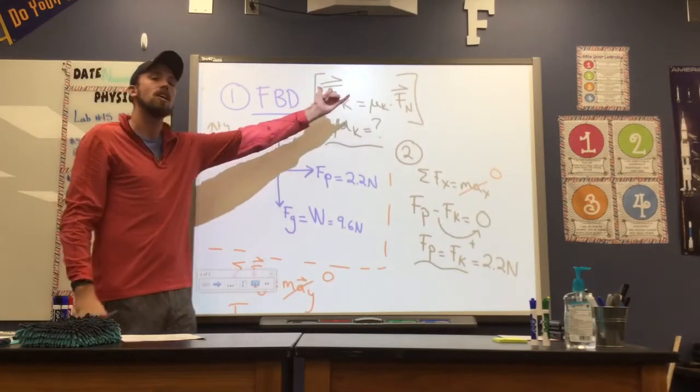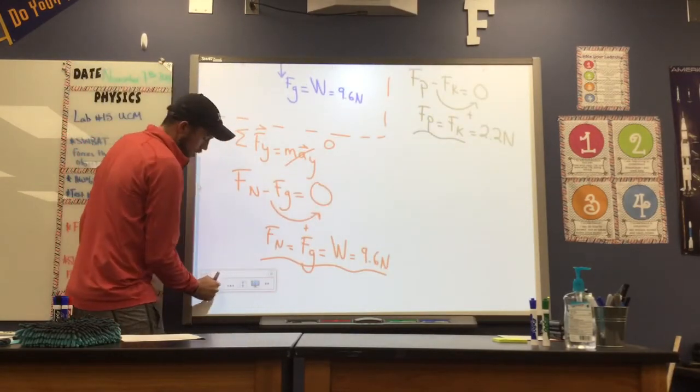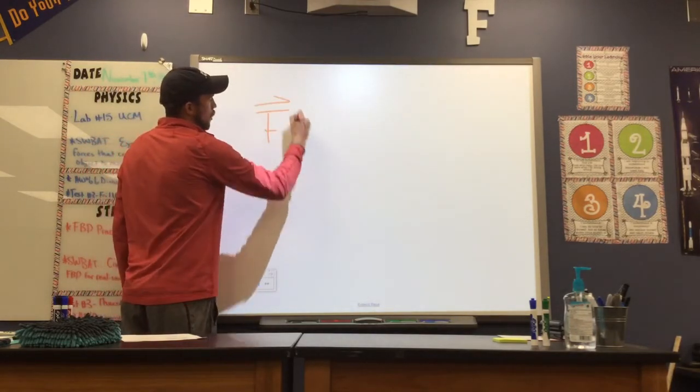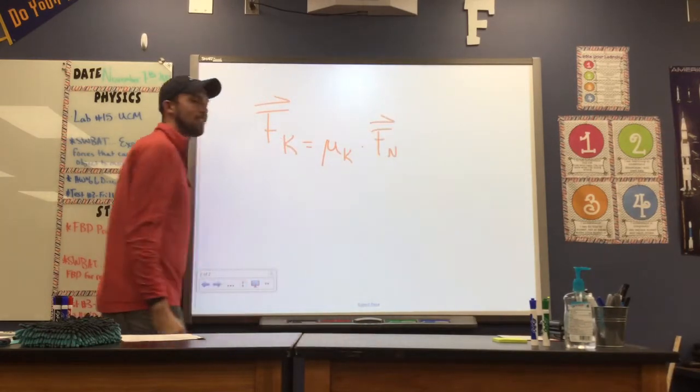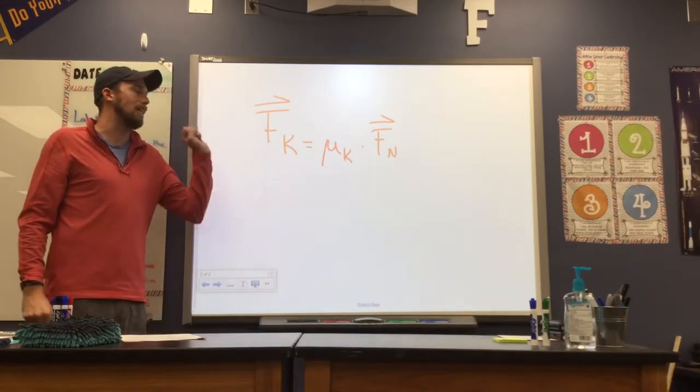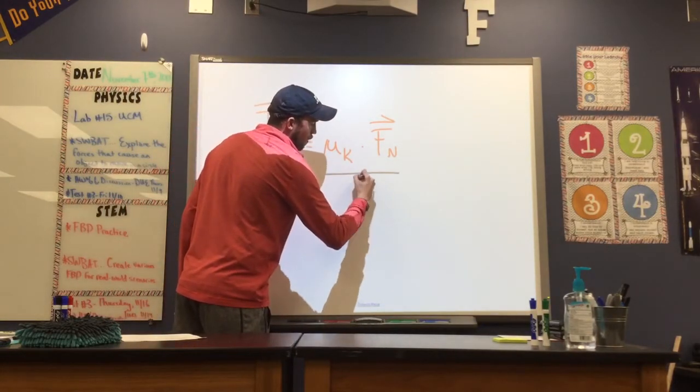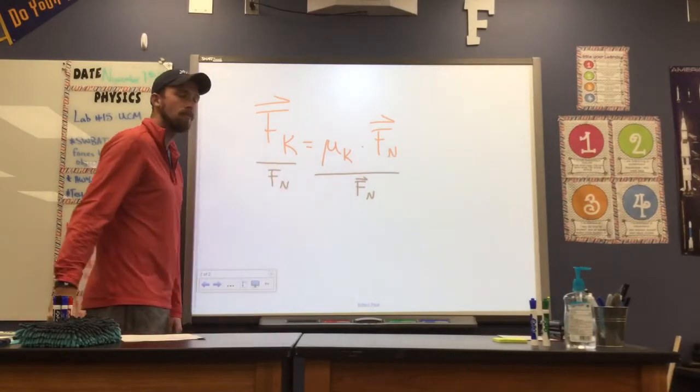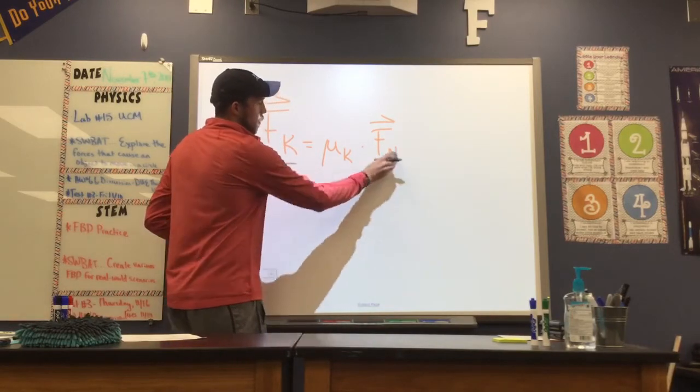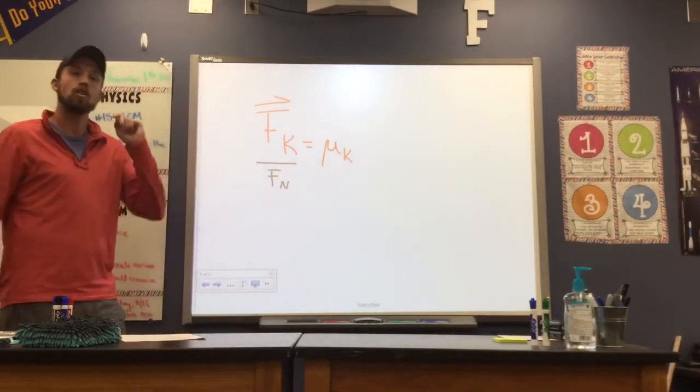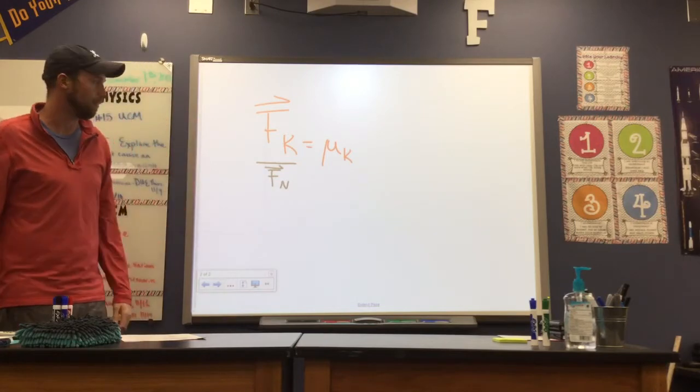So now we have both pieces that we need to find our coefficient of friction. So I'm going to come to a new page and continue working. So our coefficient of friction shows up in this equation. Fk, our frictional force, is equal to our coefficient times the normal force. Now I can't plug into our equation in this format, because our coefficient is not by itself. So, to get that coefficient by itself, I'm going to divide by the normal force on both sides of our equation. And what that will leave us with, the normal force will cancel out on the right-hand side. And I'll be left with an equation that looks like this. Our coefficient is equal to our frictional force divided by our normal force.